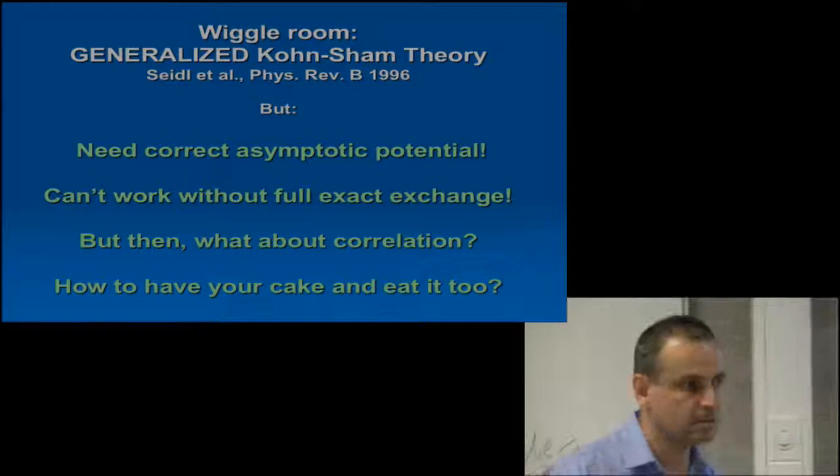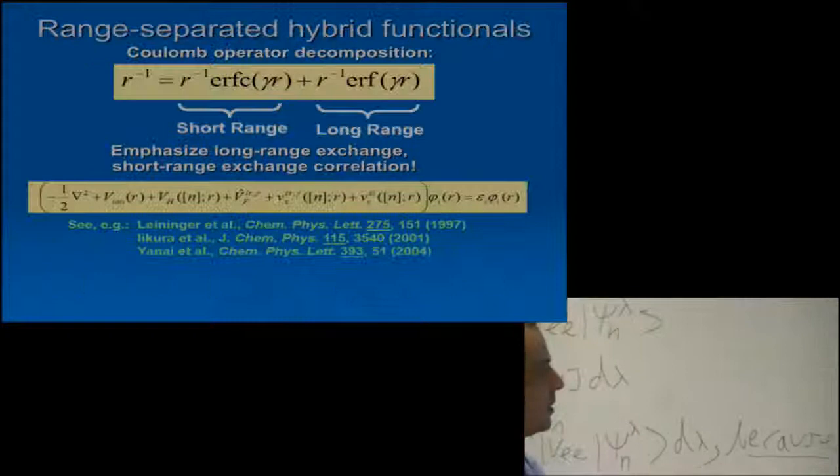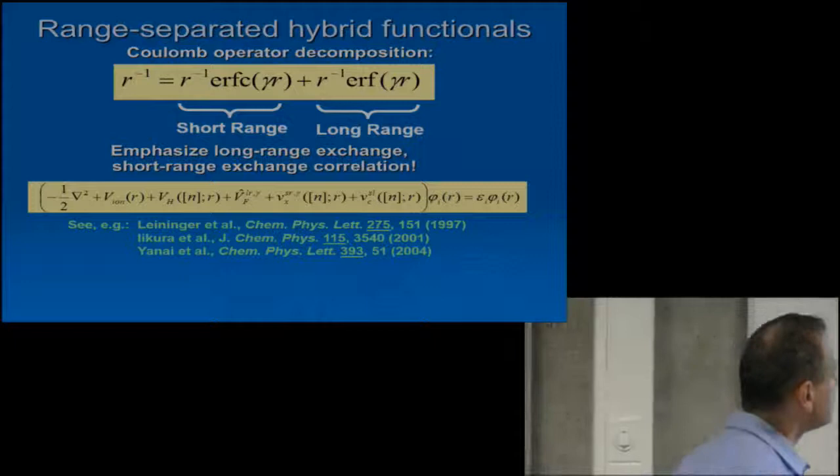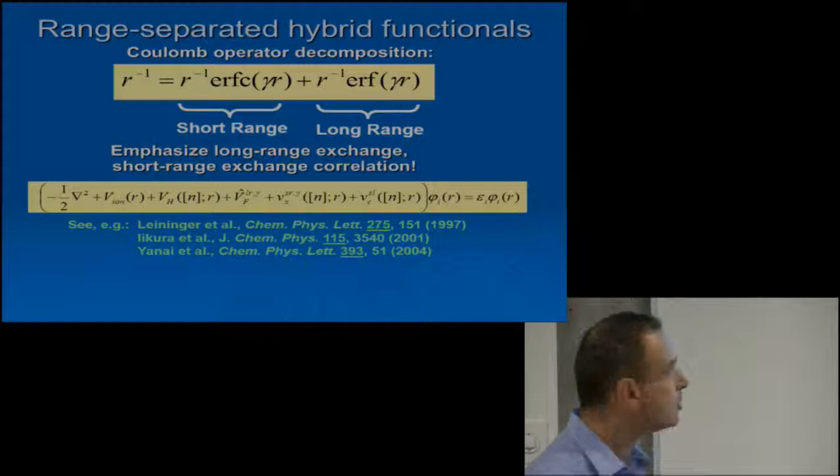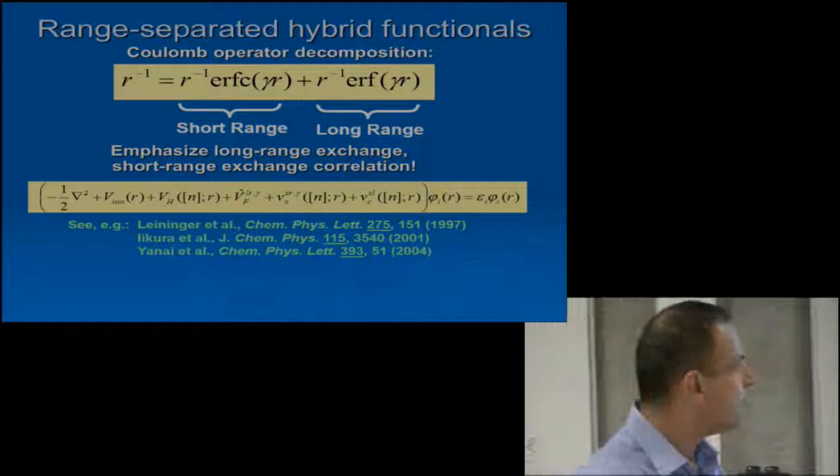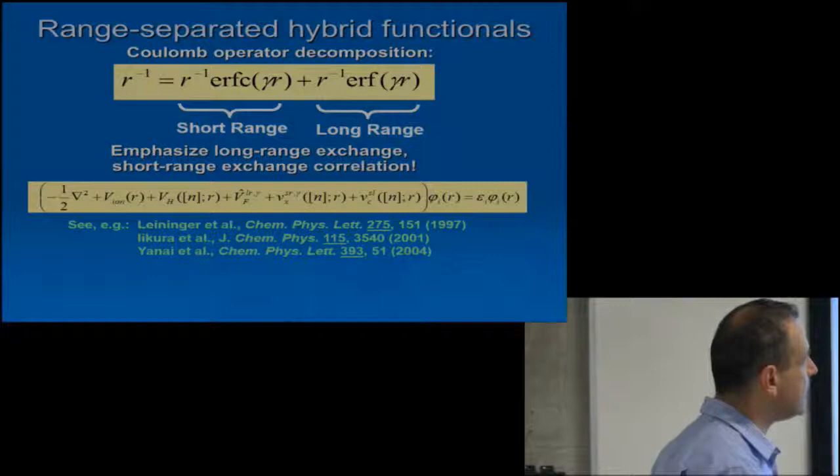So the general solution to a how to have your cake and eat it too situation is to make sure that you have at least two separate cakes. The solution is to move to a so-called range-separated hybrid functional. We take the 1 over r Coulomb repulsion and we separate it into a short-range term and a long-range term, for example, with the help of the error function and the complementary error function.